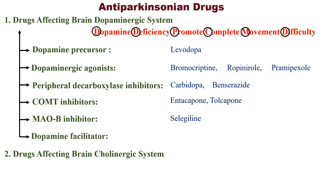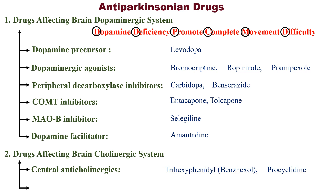The final D stands for Dopamine facilitator — example is amantadine. The second category is drugs affecting the brain cholinergic system: central anticholinergics, examples are benzhexol and procyclidine; and antihistaminics, examples are orphenadrine and promethazine. With this trick you should be able to remember the complete classification without any confusion.